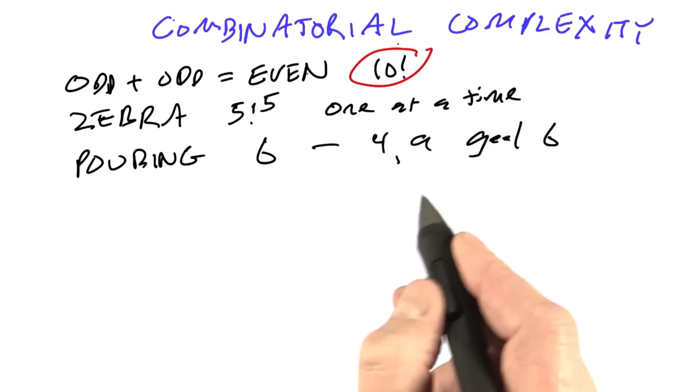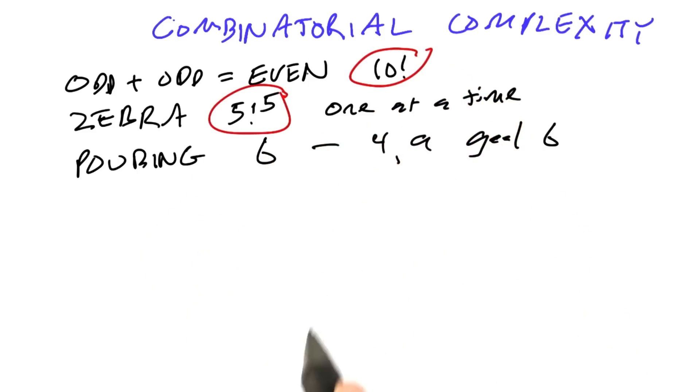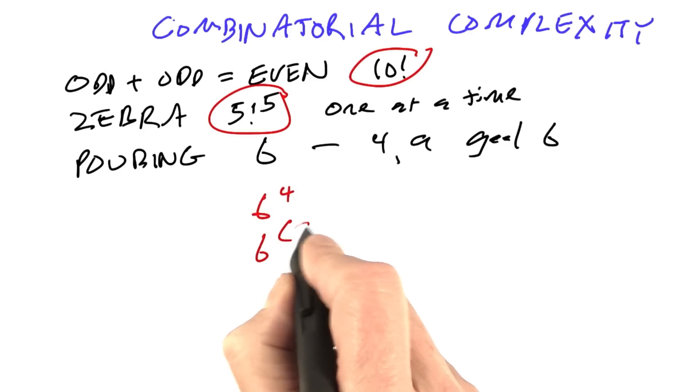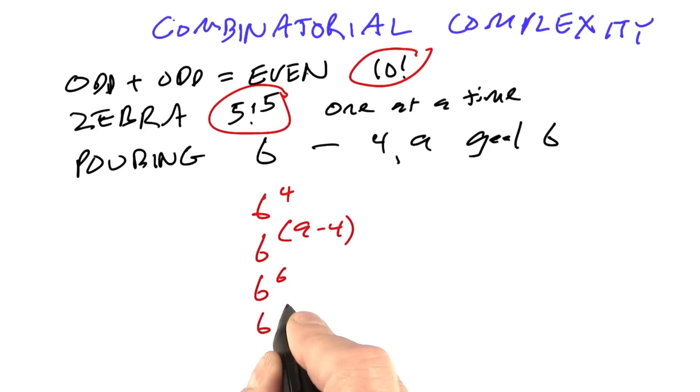For crypt arithmetic, it was 10 factorial. For zebra, it was 5 factorial to the fifth. For pouring, is it 6 to the fourth, 6 to the 9 minus fourth, 6 to the sixth, or 6 to the ninth? Or can't tell, none of the above?